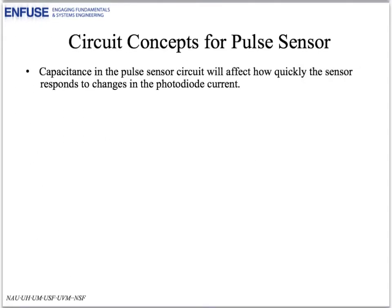If in addition to resistors, there are capacitors in the pulse sensor circuit, their values will affect how quickly the circuit can react to changes in the photodiode current.